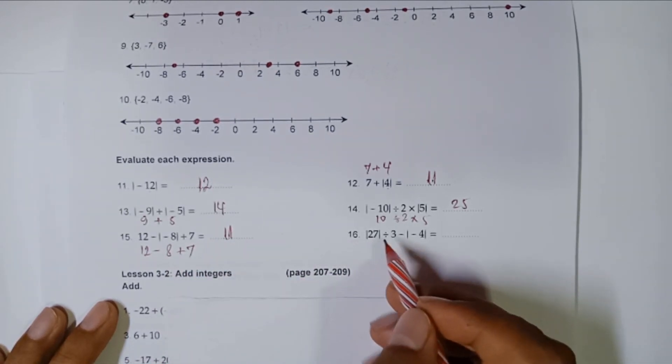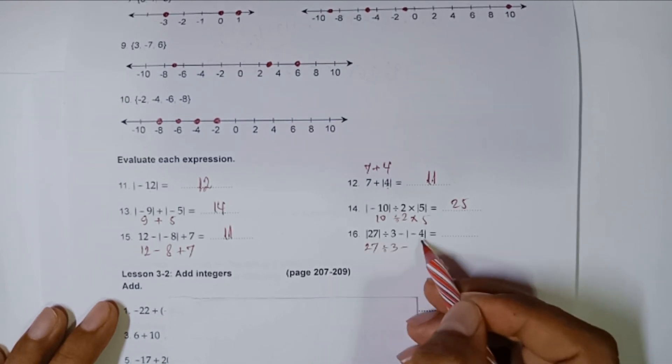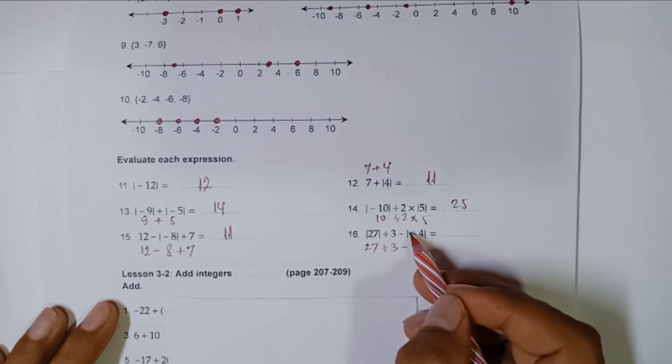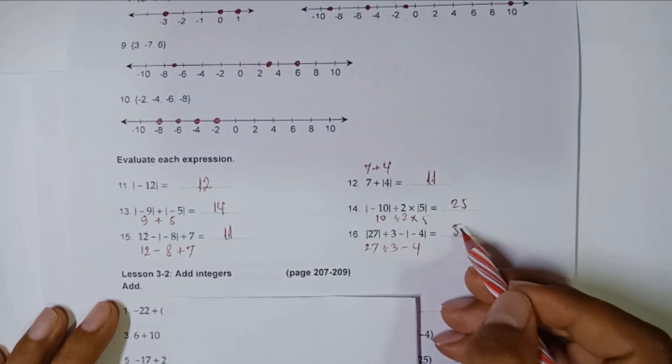This one: twenty-seven divided by three, minus this negative four within this absolute value, but it will become four like this. So twenty-seven divided by three, you got nine. Nine minus four, you get five.